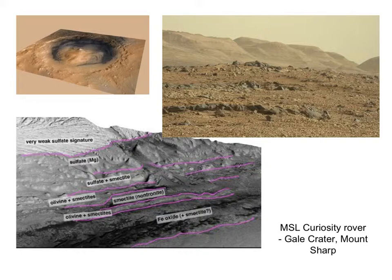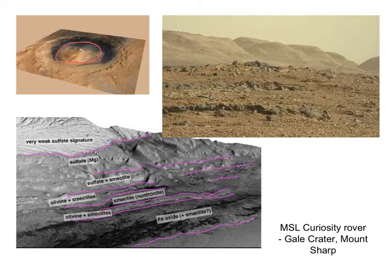The Curiosity rover's main mission is to explore the Mount Sharp feature in the middle of Gale Crater — essentially another important sedimentary rock site. Other than looking for fossils, the other main reason we're interested in sedimentary rock is that they record what the environmental conditions were like when they were laid down. The main part of Curiosity's mission will be to compare how the composition of these rocks changes over time, allowing us to really refine our story about how conditions on Mars changed over its geological past.